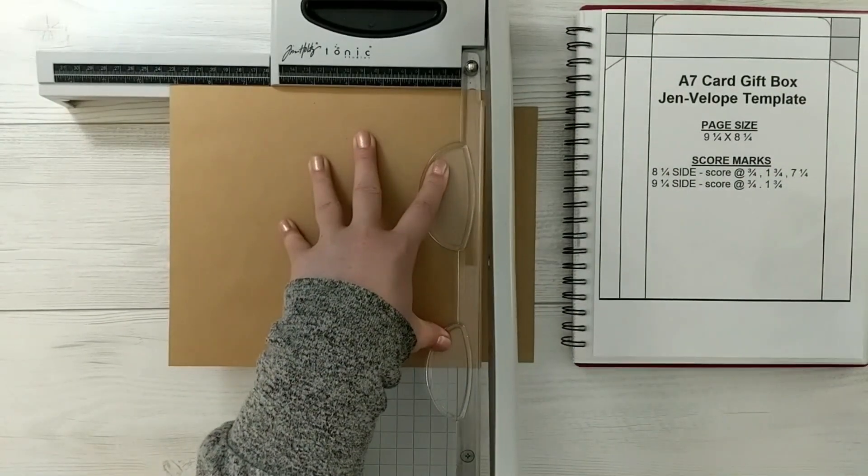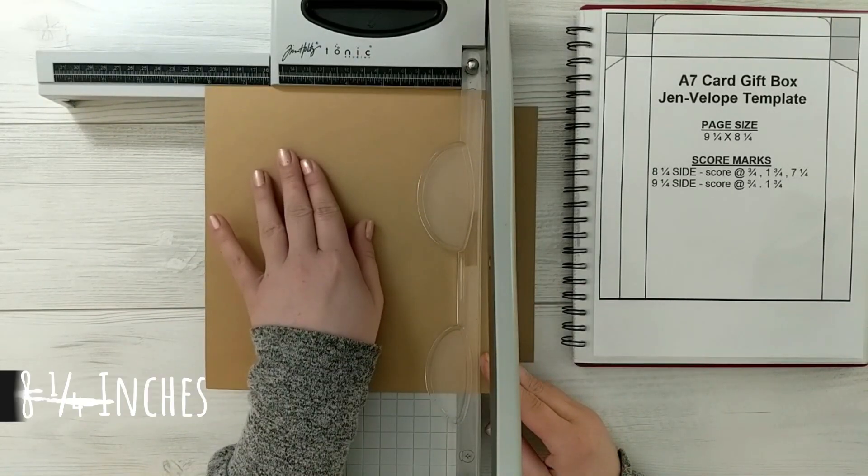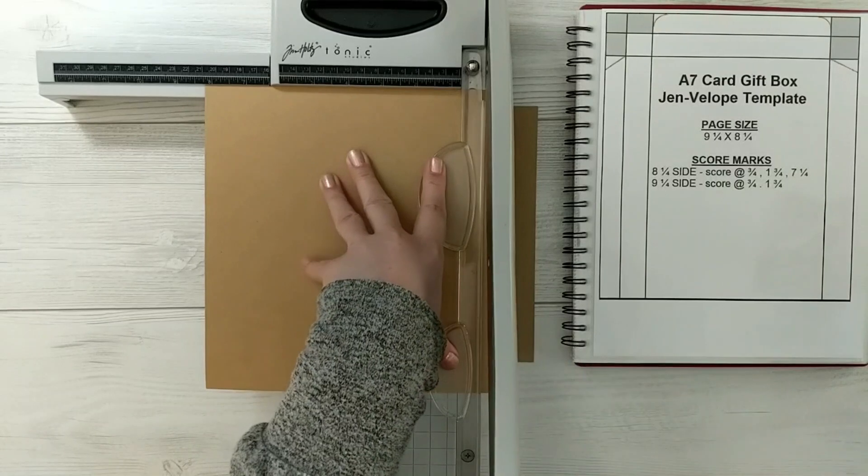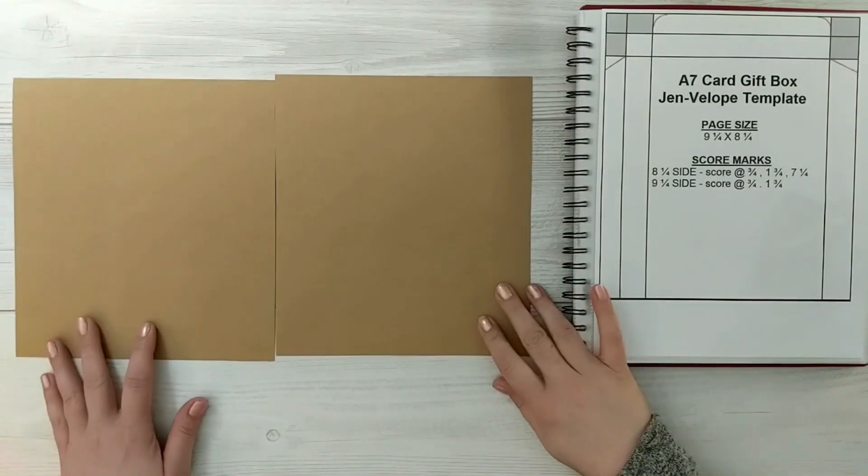You'll need to cut these two pieces of cardstock both at the same measurement at nine and a quarter and eight and a quarter. So you can do the first one and then go back and do the second one.